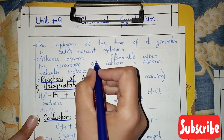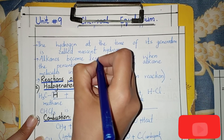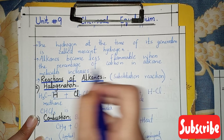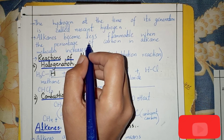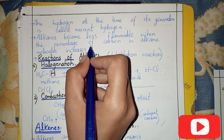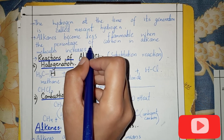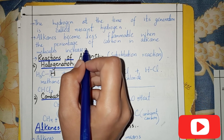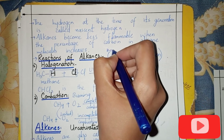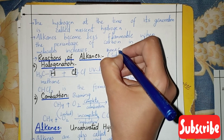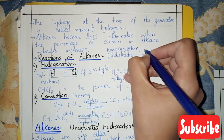Alkanes become more flammable when the percentage of carbon in the alkane molecule increases. Alkanes are non-polar, so they are insoluble in water because water is polar. However, alkanes are soluble in non-polar organic solvents like benzene, ether, and acetone.